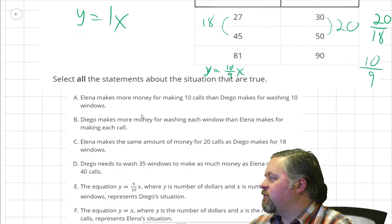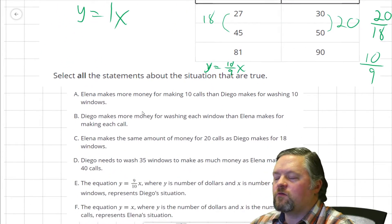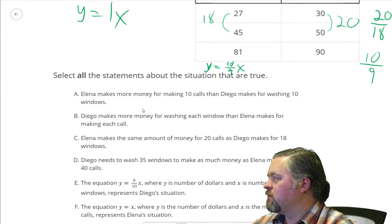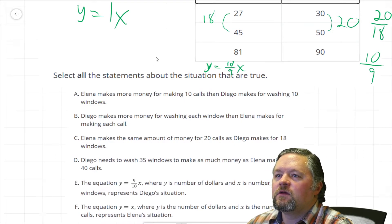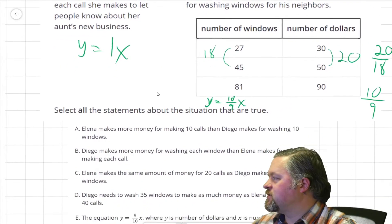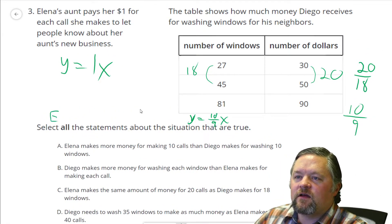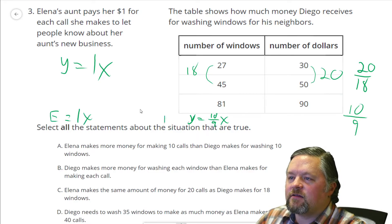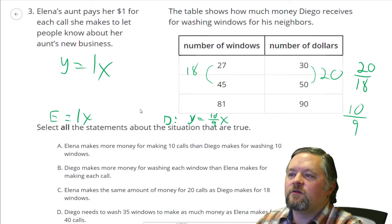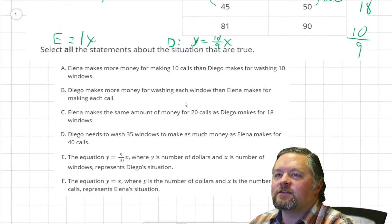So let's think about which of these are true. Just to make space so we can see these a little bigger, I'm going to write it quickly. Elena is 1X and Diego is 10/9ths X. Select all the statements that are true.